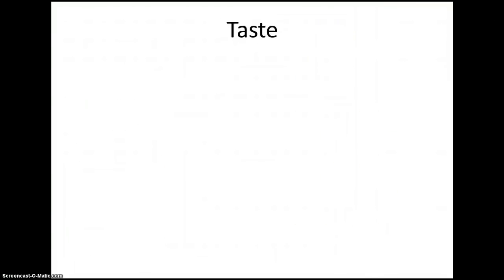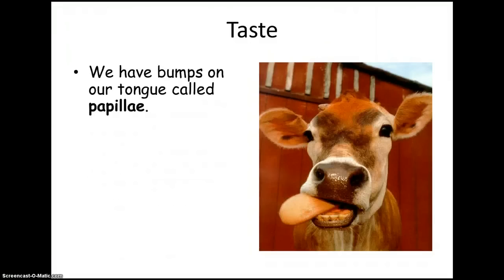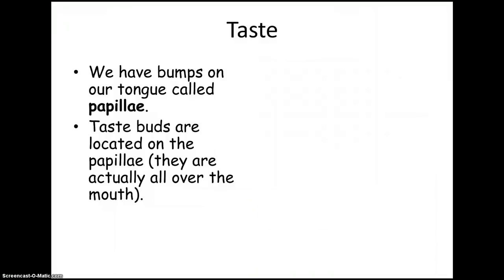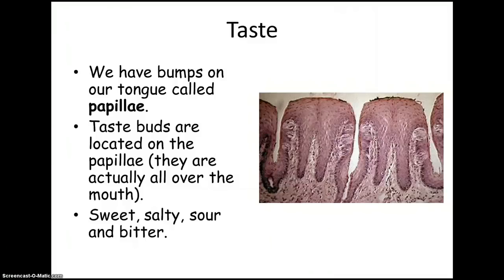Now let's talk about taste. The bumps on our tongue are called papillae, and we have taste buds located all over them — they're actually all over your mouth. There are five sensations, five ways that we perceive taste: sweet, salty, sour, bitter, and there's actually another one called umami, which is the sensation that's like savory. MSG is a good example, or fish sauce, or Parmesan cheese — some of those strong savory types of flavors.